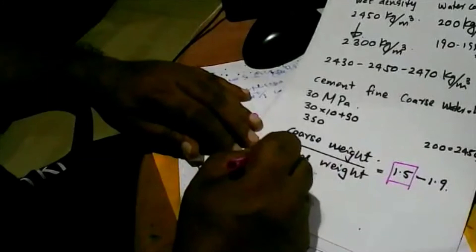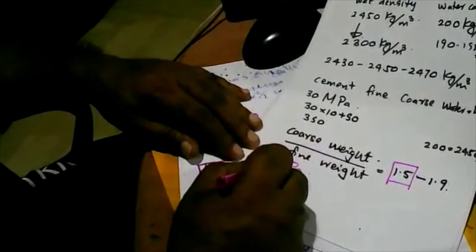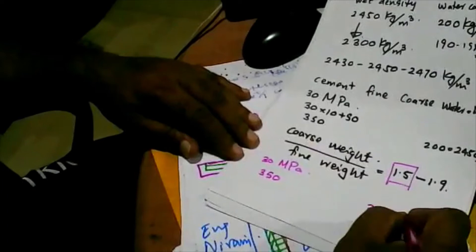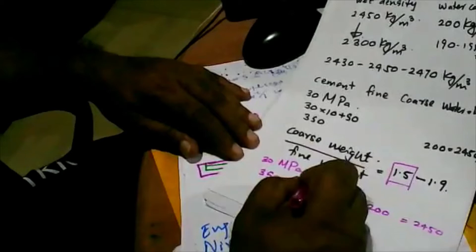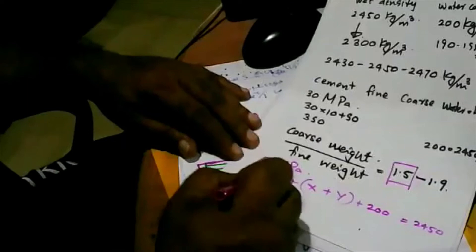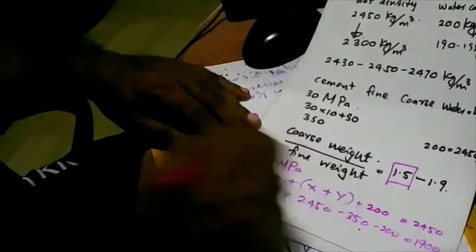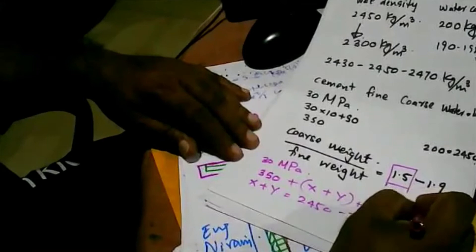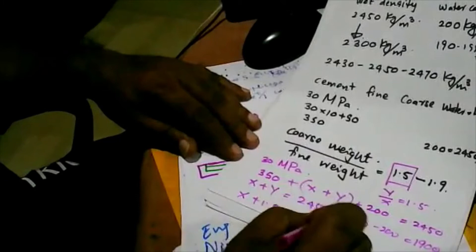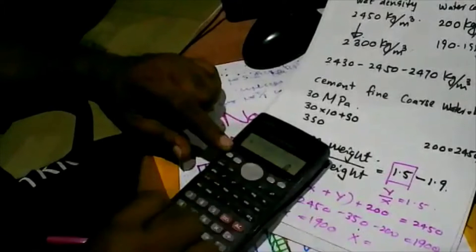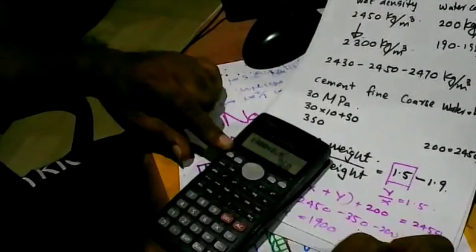For 30 megapascal concrete, cement is 350 kg and water is 200 kg. So: x + y = 2450 − 350 − 200 = 1900. With y/x = 1.5, we get x + 1.5x = 1900, meaning 2.5x = 1900, so x = 760 kg (fine aggregate) and y = 760 × 1.5 = 1140 kg (coarse aggregate).